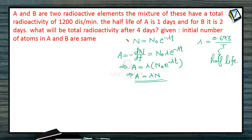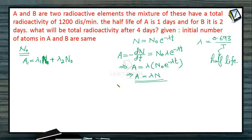In a mixture, the activities of both elements remain independent. It is given that the initial number of atoms in A and B are the same, so let N₀ be the initial number for both. The total initial activity A1 = λ₁N₀ + λ₂N₀, since λN gives the activity for each element at the initial instant when the number of atoms is N₀.